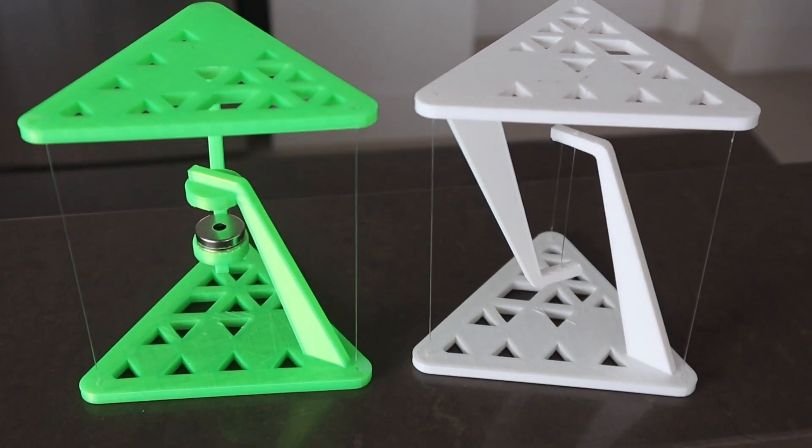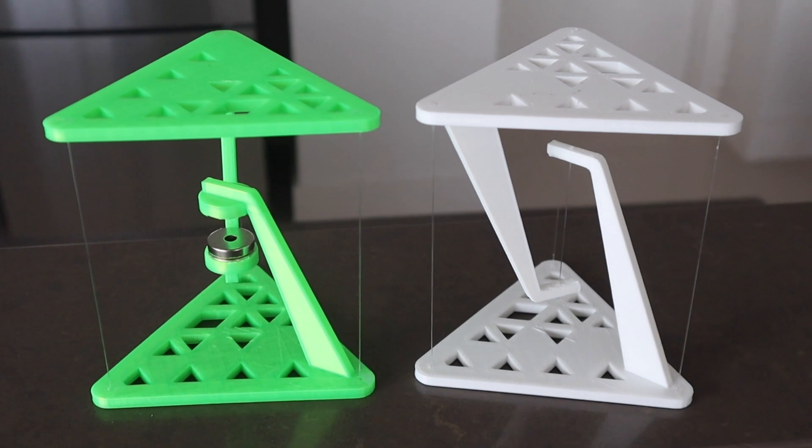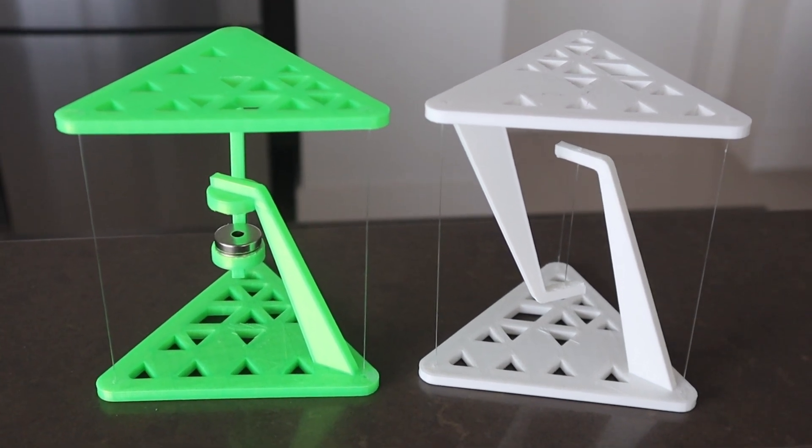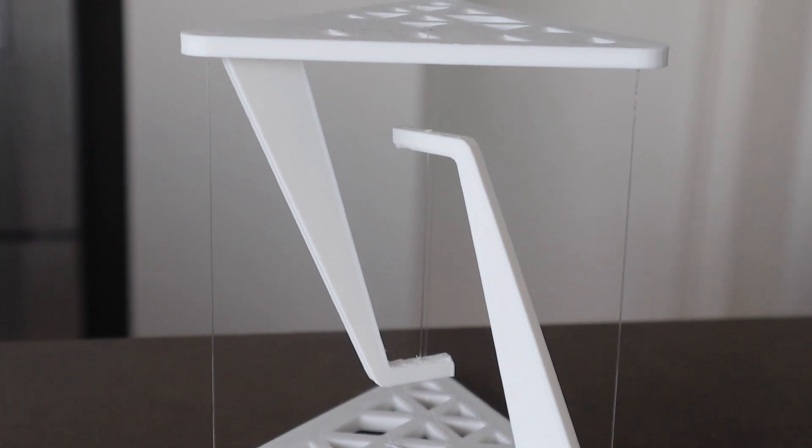When you first look at them it appears that the top surface is being supported by the three outer pieces of fishing line, but taking a closer look you'll see that the line doing all of the work is actually the one in the center.